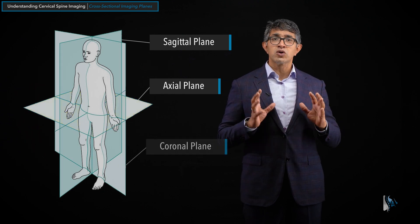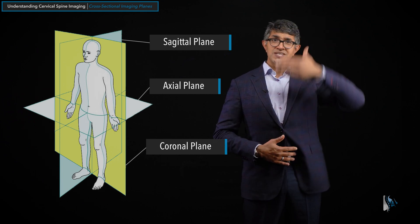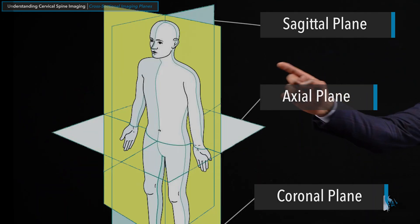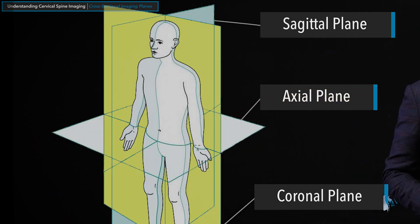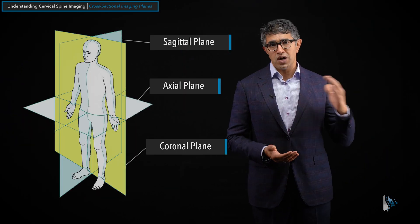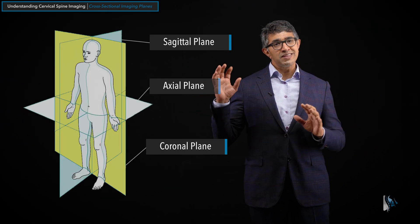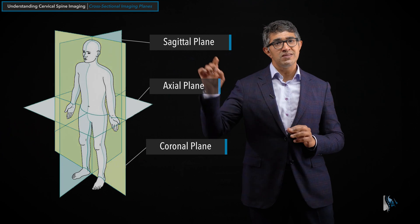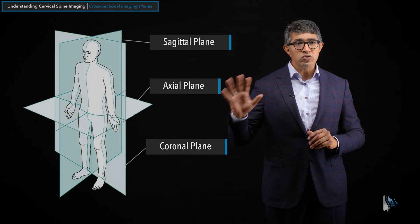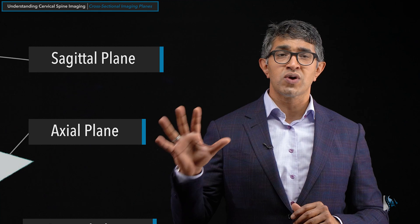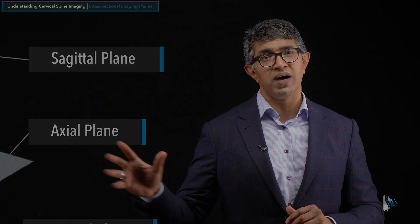The last plane to talk about is the coronal plane. That is a plane where you take a slice right down the middle, and that's depicted right here. Not every study is going to have a coronal plane — you'll see it most commonly on CAT scans, and you don't always see it on MRI scans. But these three planes — the sagittal, the axial, and the coronal — are the planes we use when trying to understand the three-dimensional anatomy of the cervical spine.